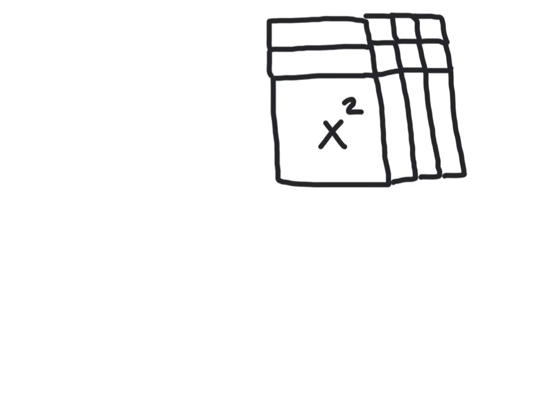Product and a sum. So look at this area model - that's what it's called. If you look at it, this is x², so this side is x. The area of each one of these is x, the length times the width, and then these are ones because the shortest side is one.